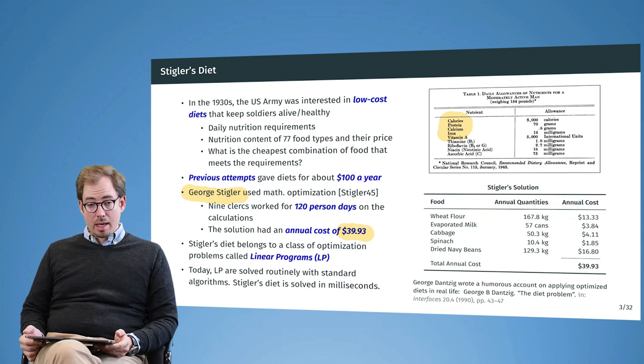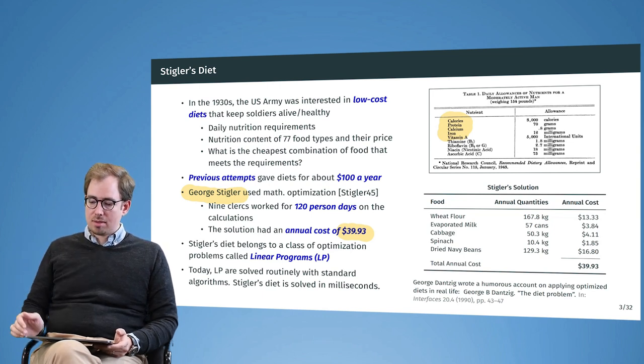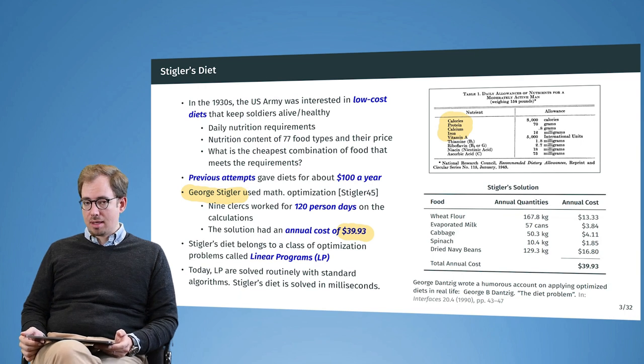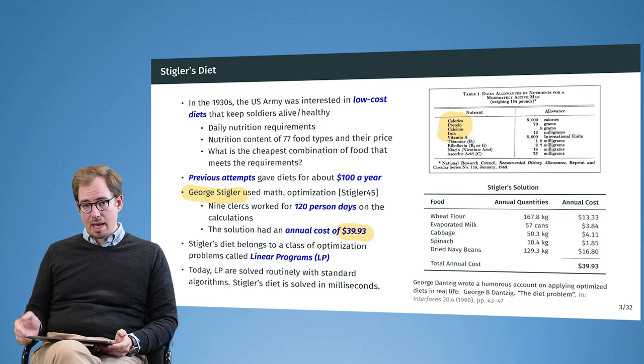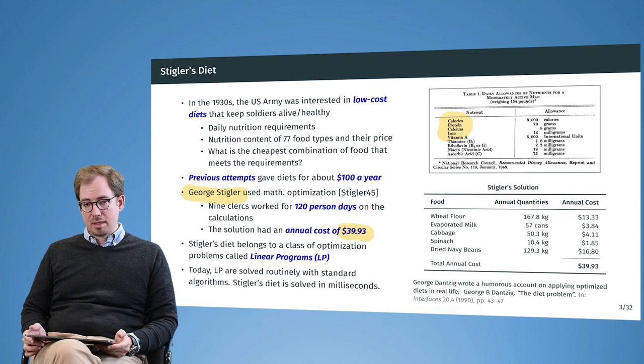Today this kind of optimization problem, a linear problem, can be solved really in milliseconds. Our computers barely break into a sweat to solve this kind of problem, which back in the day took 120 person-days. This is really interesting—we see how an actual problem that has importance, because feeding hundreds of thousands of soldiers costs a lot of money, can be cast in a mathematical way and then solved.